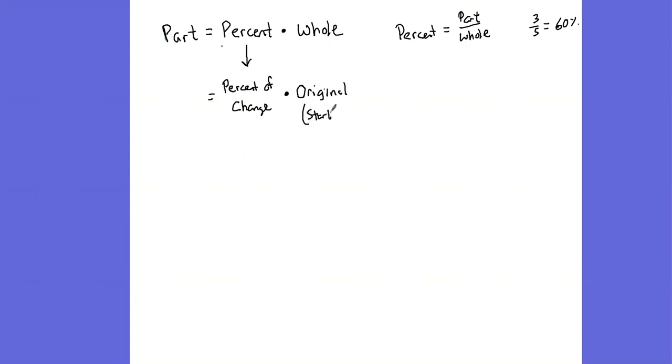or what you had at the start. So you start with some amount, and then it changes by a certain percent, and you multiply that by the percentage of change. And then your part is basically going to be what you've ended up with, or what is your amount of change here. So if this is a percentage of change times your original, your part is really going to be some amount of change.